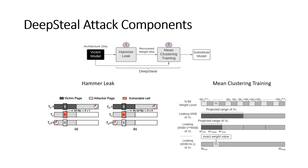Deep Steal consists of two key components. First, the rowhammer leak attack, which is a rowhammer-based side channel attack that can flip certain vulnerable cells to leak certain victim page bits. Using those partial bit information, the attacker can project the weight range and train a substitute model using mean clustering penalty.